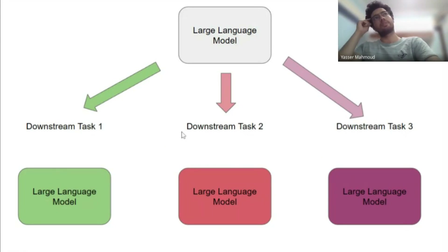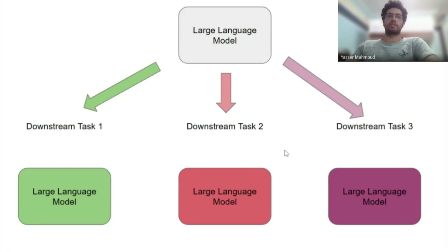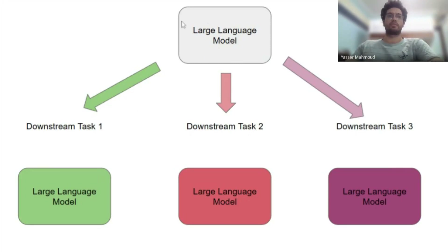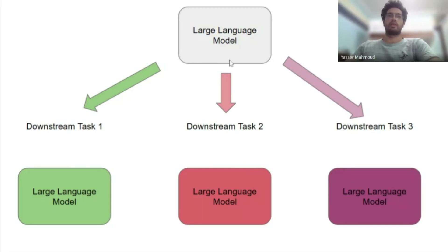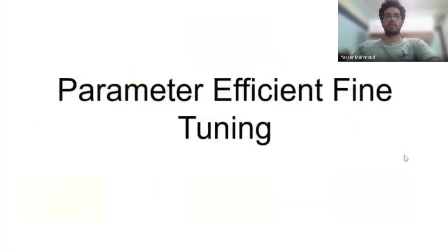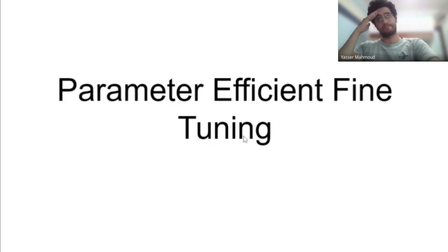It's not just about having copies of the model. When training with adaptive optimizers like Adam, most of the memory footprint actually comes from the optimizer, not the model itself. Adam keeps two numbers per parameter, so the optimizer state is literally like two models. This makes fine-tuning extremely expensive even for a single fine-tuned model, leading to a new line of research called parameter-efficient fine-tuning, of which LoRA is a part.